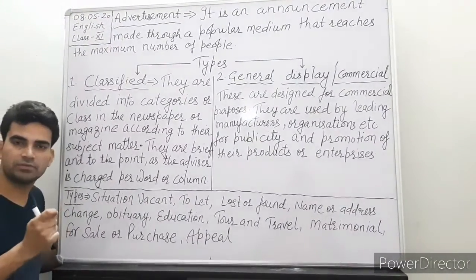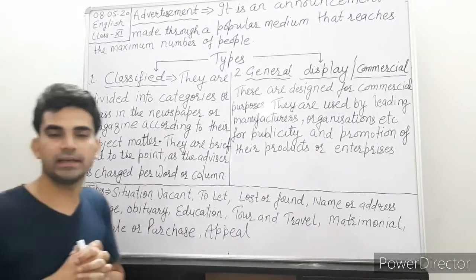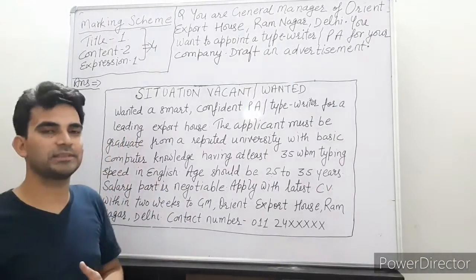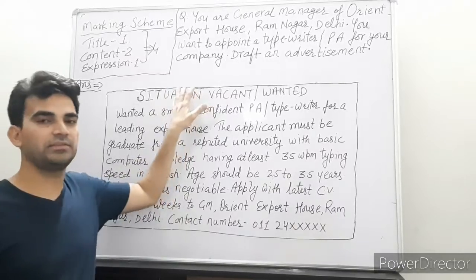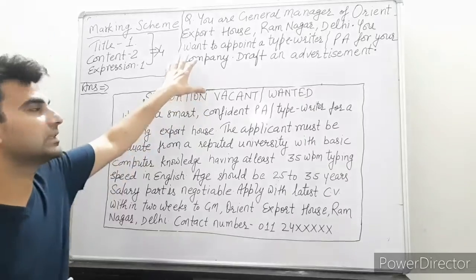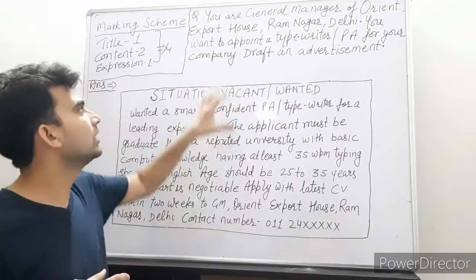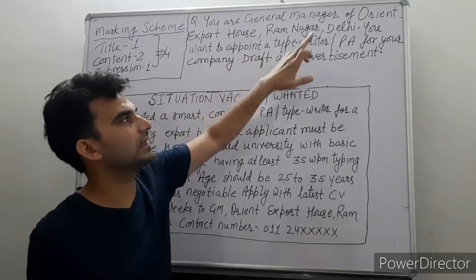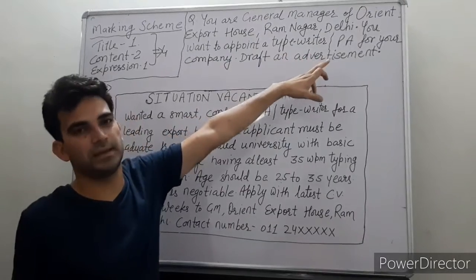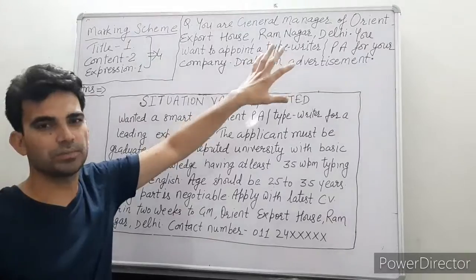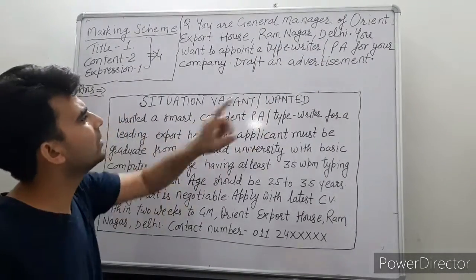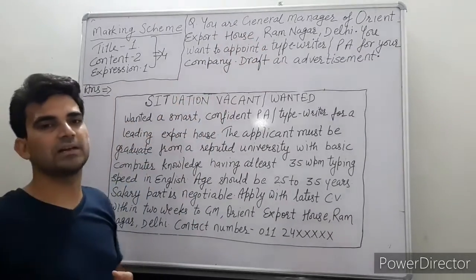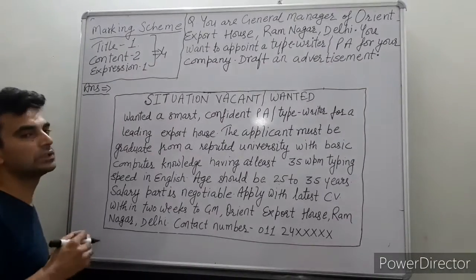Now we will take one example to learn how to write a classified advertisement. So, the question is: You are General Manager of Orient Export House, Ramnagar, Delhi. You want to appoint a PA cum typewriter — meaning someone who can do both PA and typewriter work. Draft an advertisement for your company.